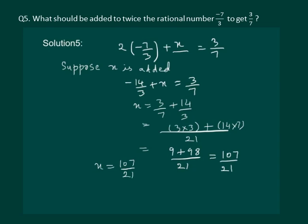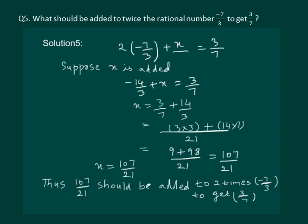We can say 107 by 21 should be added to 2 times minus 7 by 3 to get 3 by 7.